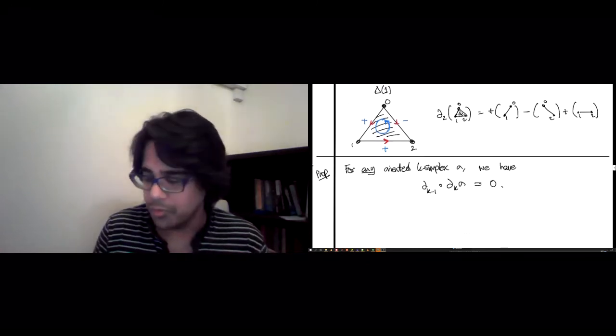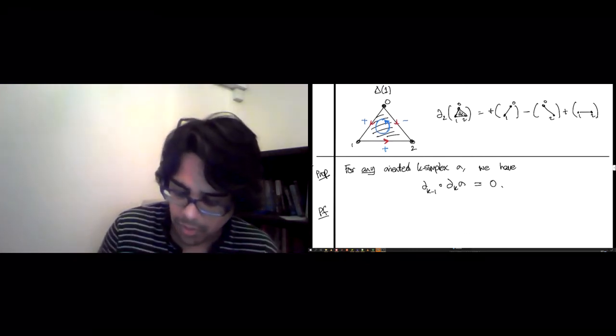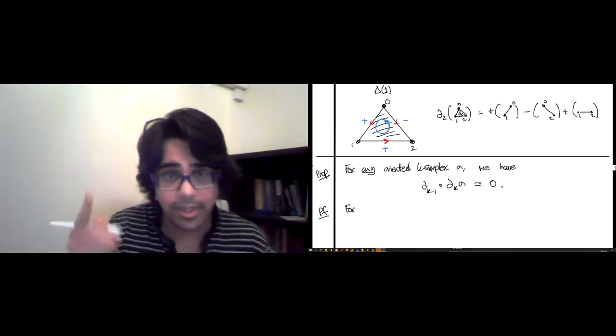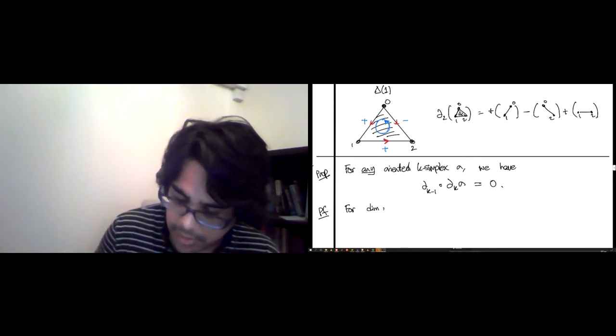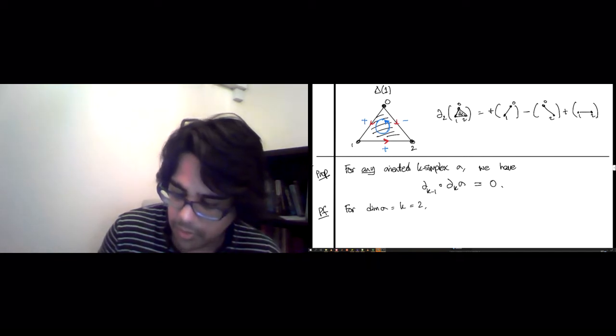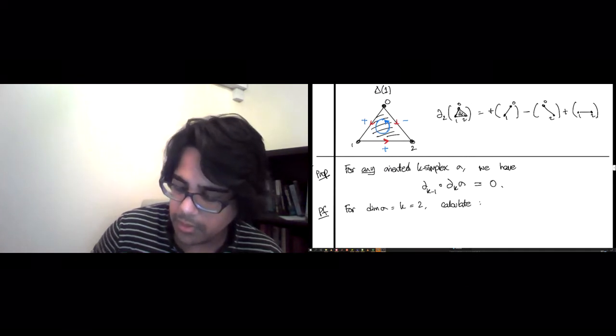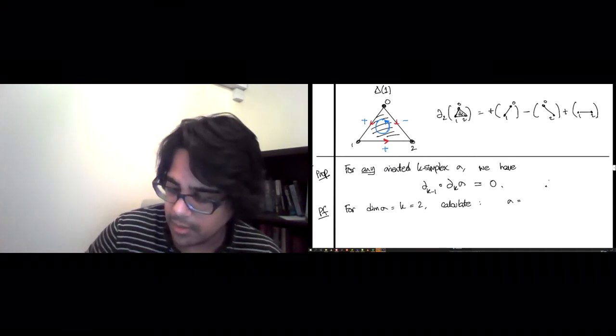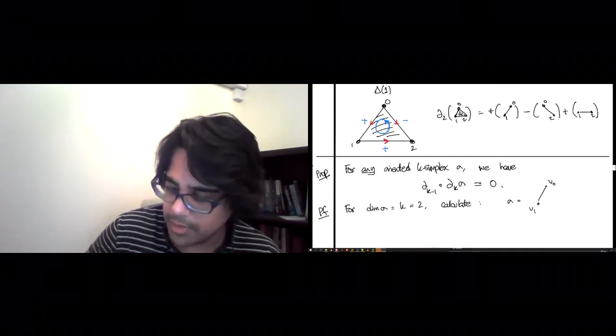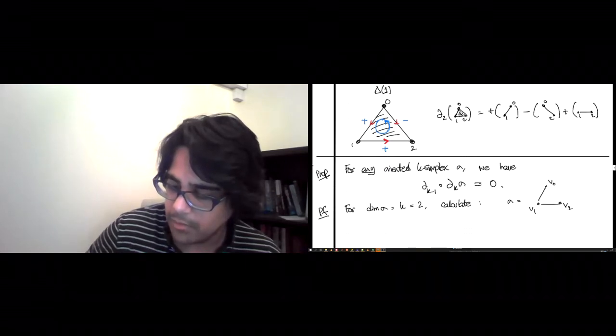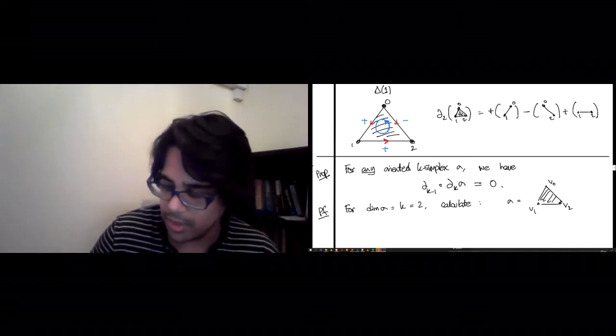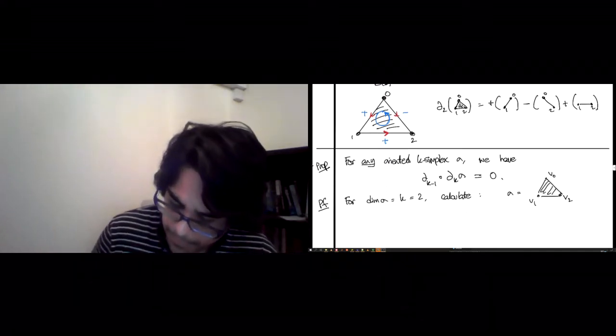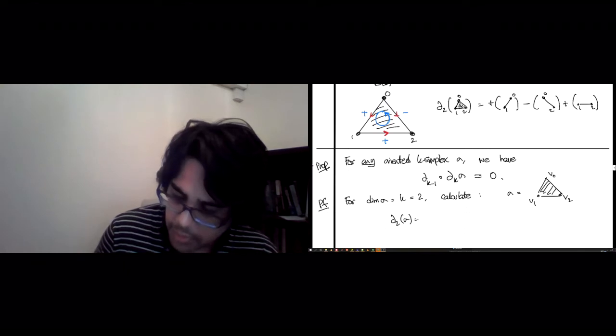Unfortunately, the proof of this has been assigned as an exercise, but I want to show you what happens for the case that we've drawn here. So for dimension sigma, which is k to be 2, we could calculate this. So let's say sigma is exactly as before, v0, v1, v2, order v0 less than v1 less than v2.